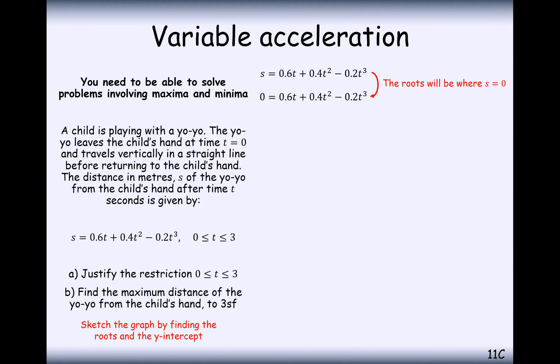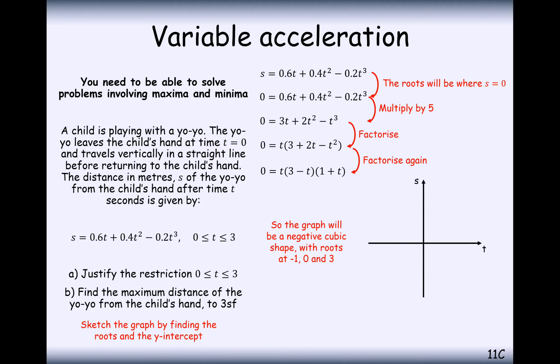Now, let's find the roots of this polynomial. So we'll set s equal to 0 and we'll eventually see that we can factorise this to 3 minus t, 1 plus t. So we're going to have roots at minus 1, 0 and 3. Now, it definitely makes sense, therefore,